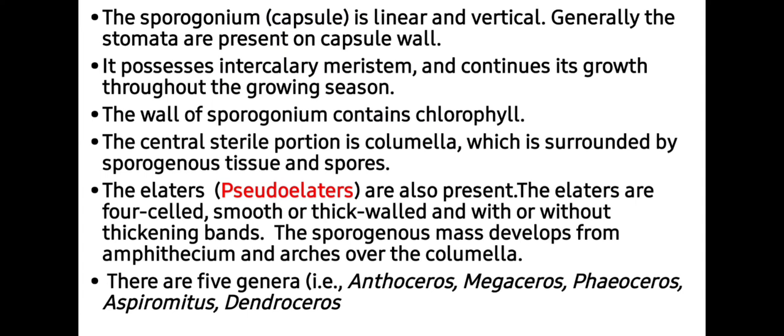The sporogonium is linear and vertical. Generally, stomata are present on the capsule wall. It also possesses an intercalary meristem. The meristematic tissues are responsible for continuous activity through frequent cell division, which is why it continues its growth throughout the growing season.